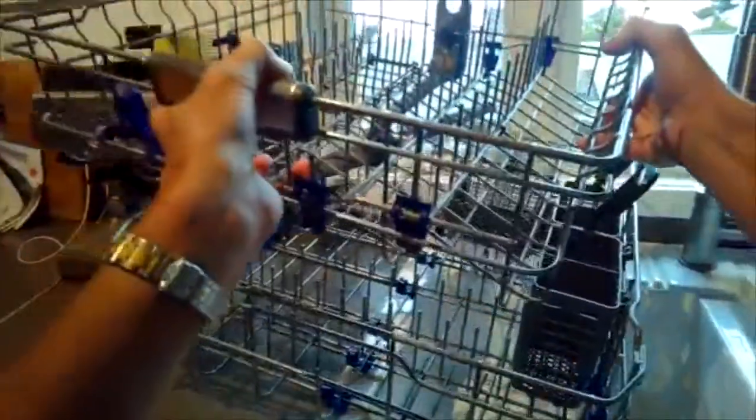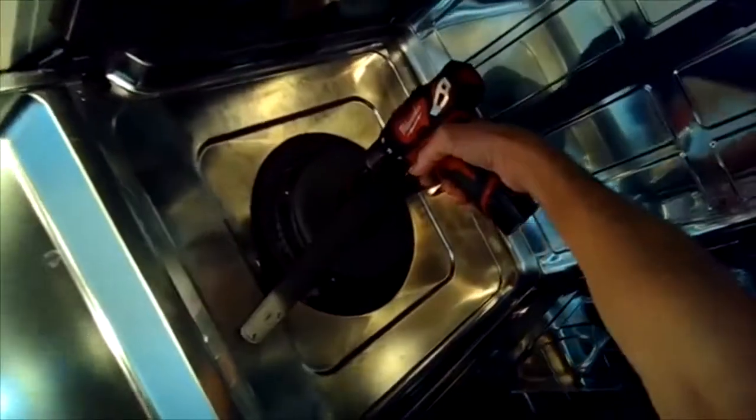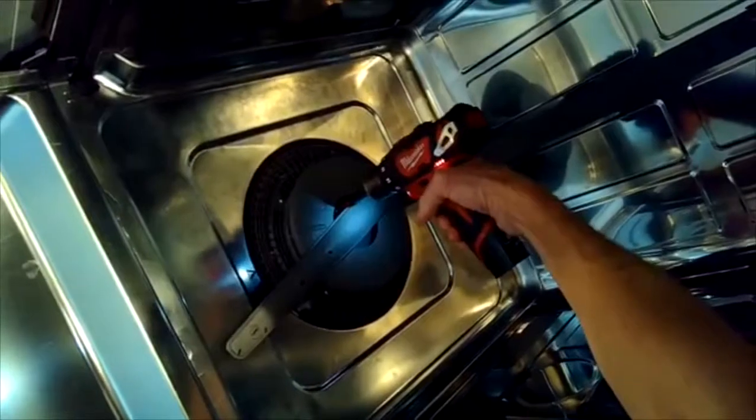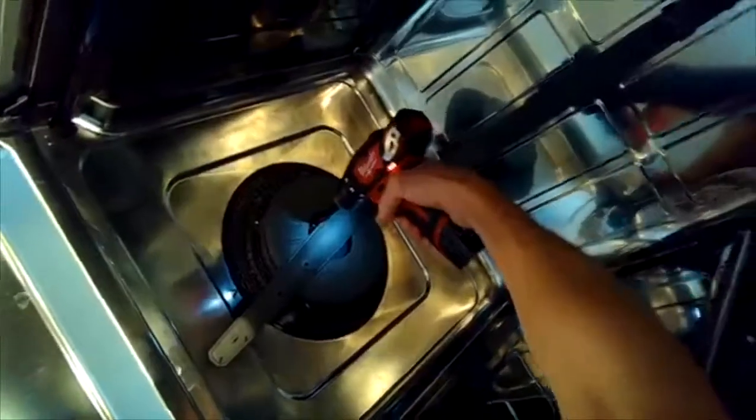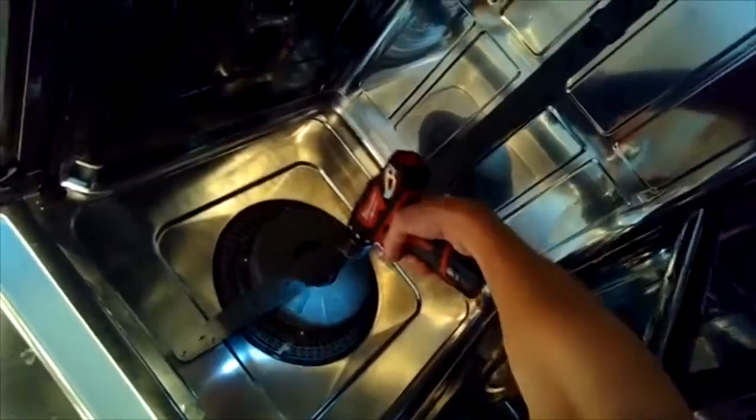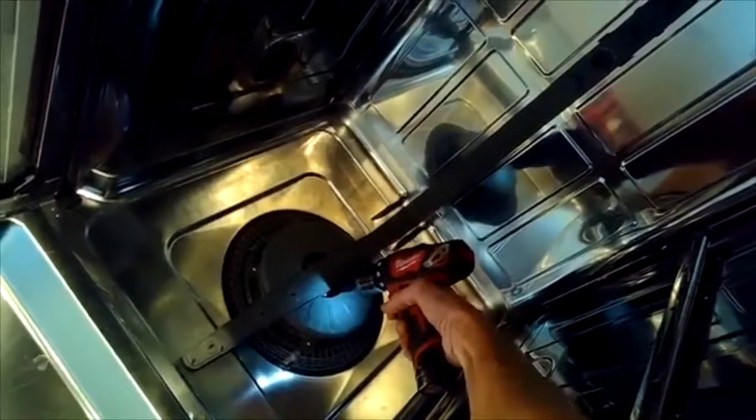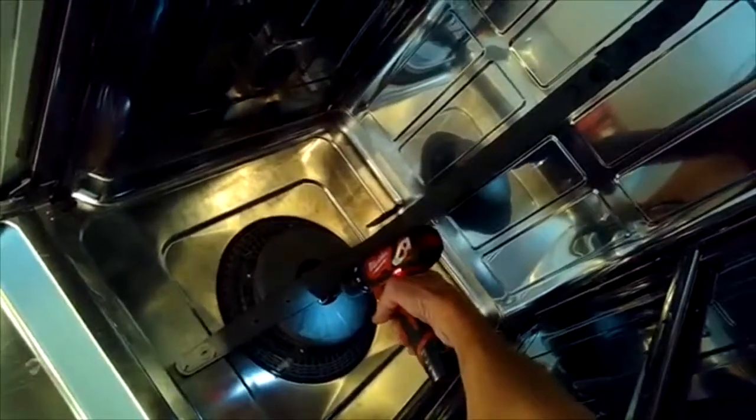We're going to get these baskets out - the bottom basket and the top basket. And the circulation pumps are pretty inexpensive on the LG dishwasher. We're going to be removing a couple of screws that are holding on the lower spray arm. Two Phillips head screws. Once you get those out, you can lift the spray arm straight up. Get that out of the way.